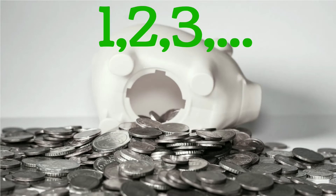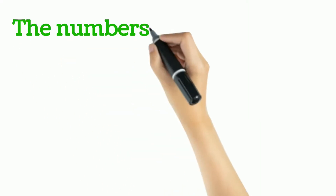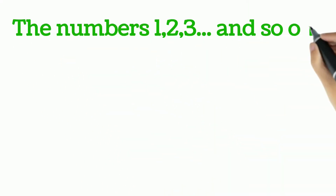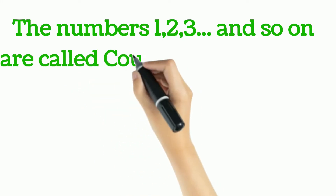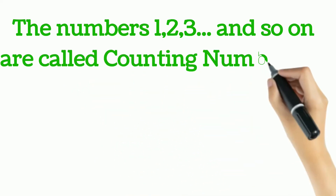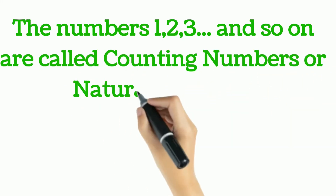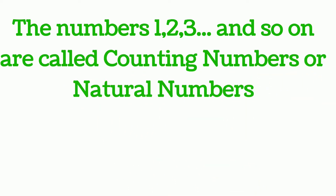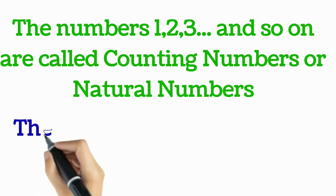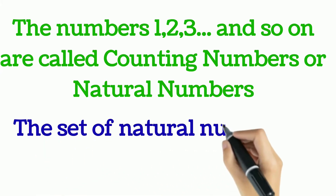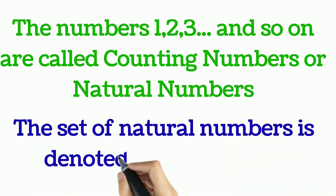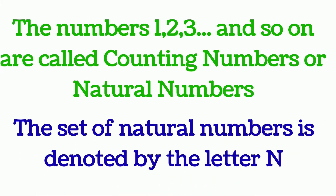These numbers — one, two, three, and so on — are called counting numbers, or they are called natural numbers. The other name for counting numbers is natural numbers, and the set of natural numbers is denoted by the letter N.